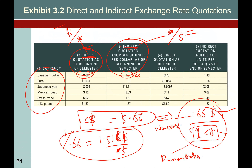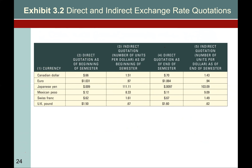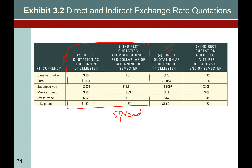Here are the examples — this is the direct rate and this is the indirect rate. That is at the end of the semester, and this is at the start of the semester. You can also find out the spread, or if you want to find out the percentage change in the currency, you can do that as well — just comparing start of semester to end of semester.